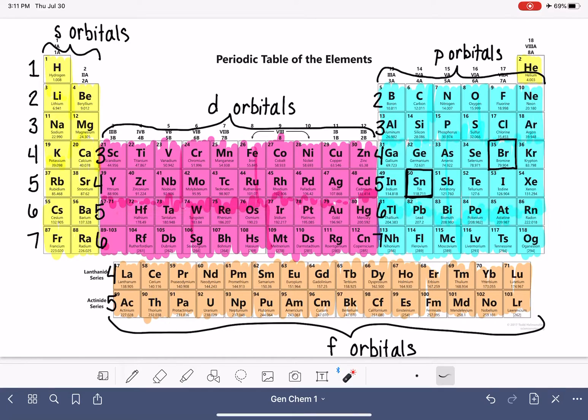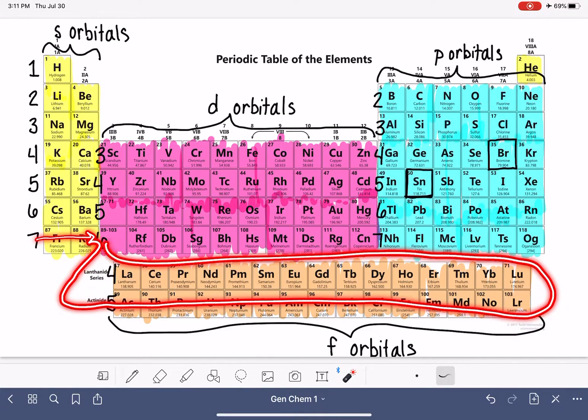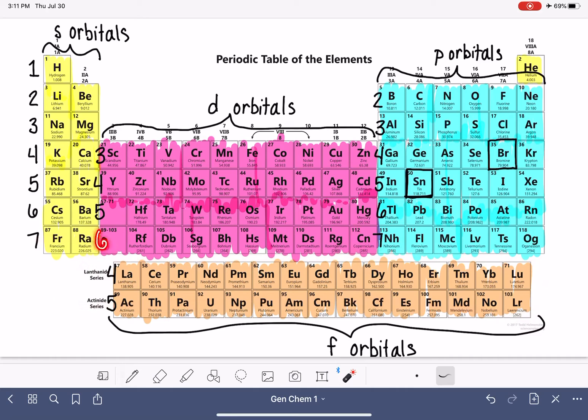Isn't this awesome? 7s, 5f 6... That's a six. 6d 7p gets us to the end of the periodic table. Pretty amazing. So if you have a reference like this, or if you're able to draw this onto a periodic table, you can literally come up with the electron configuration of anything.